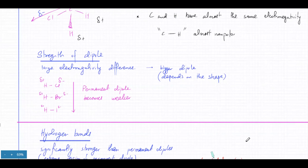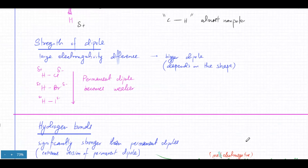The strength of the dipole depends on how large the electronegativity difference is. If the electronegativity difference is very large, then the dipole created would be very large as well, and vice versa.